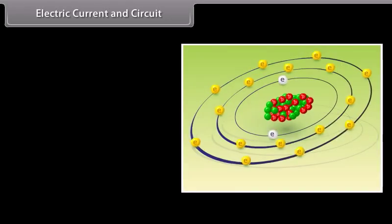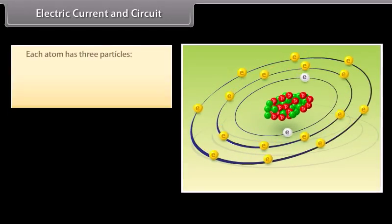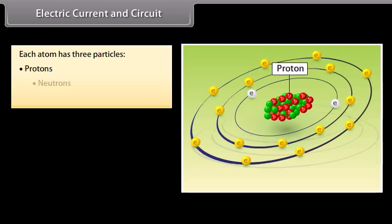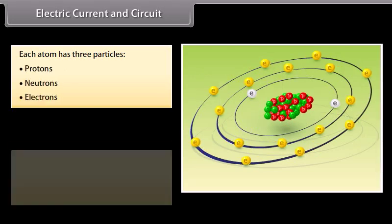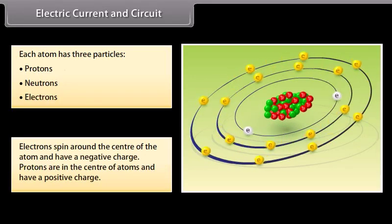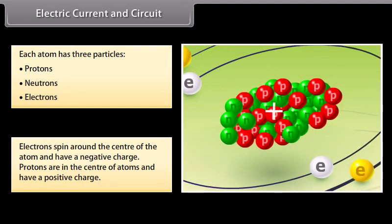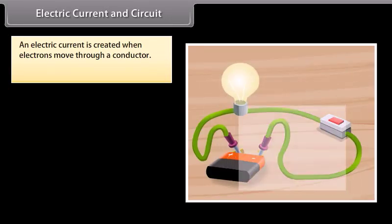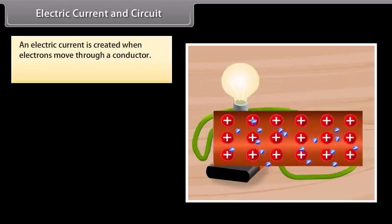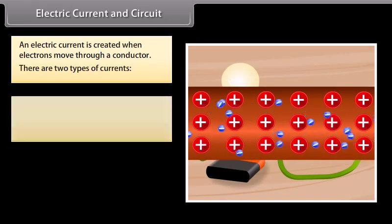Electric current and circuit. All things around us are made up of atoms. Each atom has three particles: protons, neutrons, and electrons. Electrons spin around the center of the atom and have a negative charge. Protons are in the center of atoms and have a positive charge. An electric current is created when electrons move through a conductor. There are two types of currents.